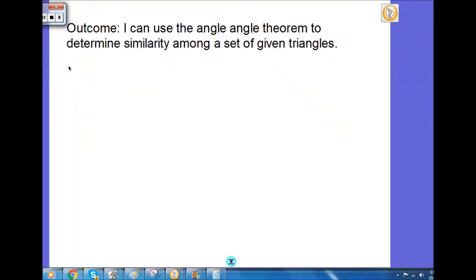All right, the outcome for this one is I can use the angle angle theorem to determine similarities among a given set of triangles. We are in the module book but we're also in our notebook, so you will need your notes and practice section. This is going to correlate to lesson 10 of the module book, which is the informal proof of AA criterion for similarities.